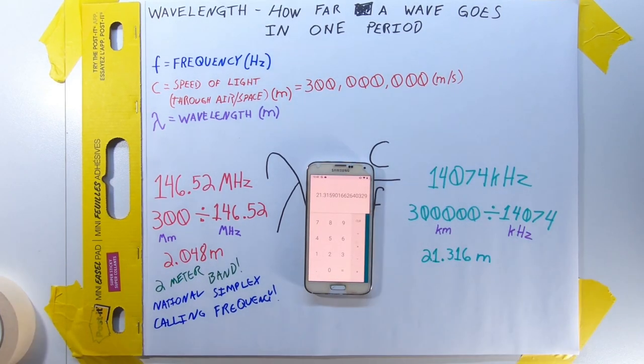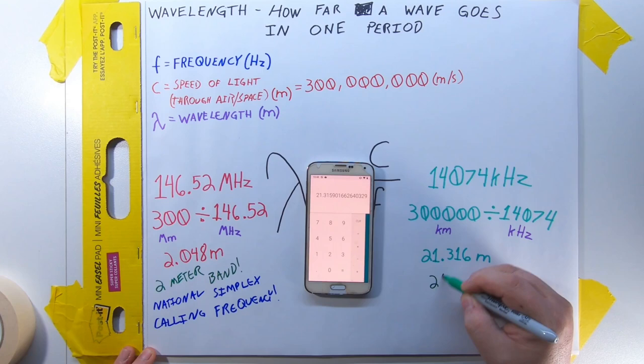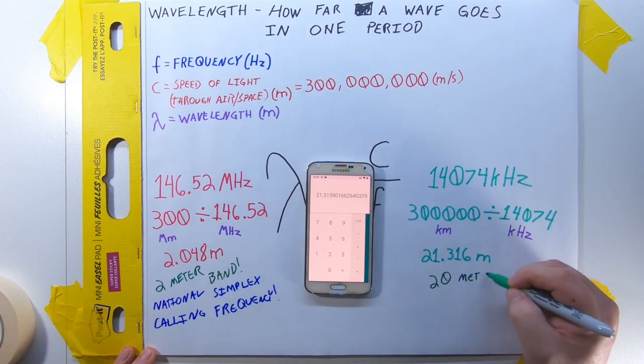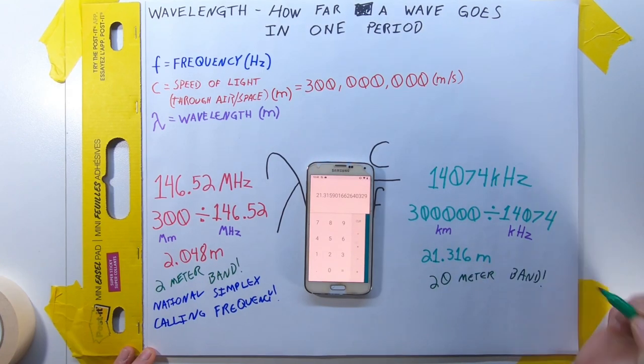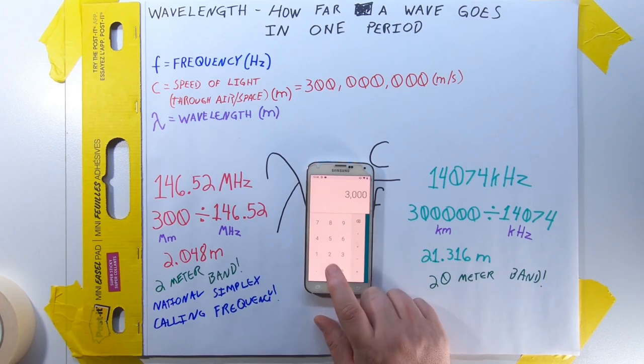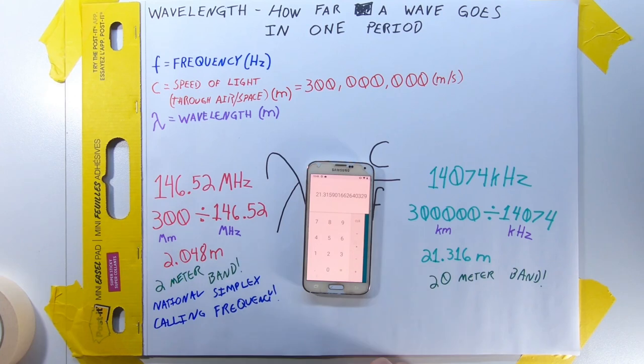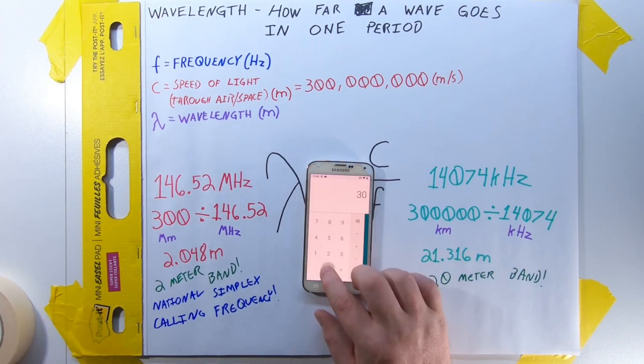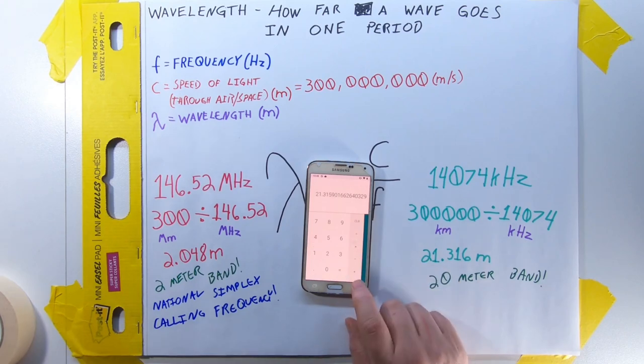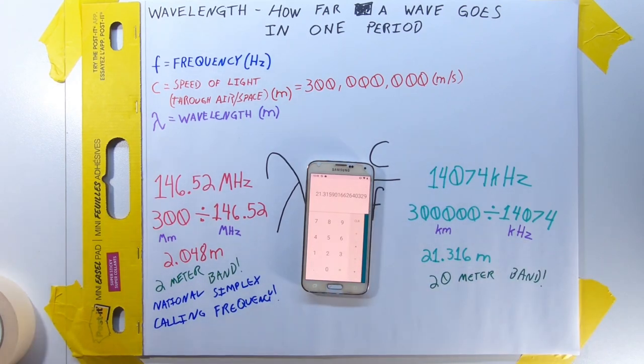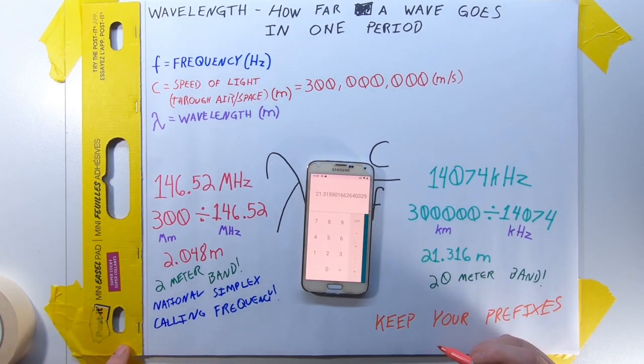As it happens, there is also a 20 meter band for amateur radio, and this frequency is pretty popular right now. We could have also done this in plain hertz and meters, which would be 300,000,000 divided by 14,074,000. Or we could have converted to megahertz and do the much simpler 300 divided by 14.074 and come up with the same answer. Just make sure your units match.